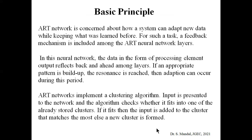Coming to the basic principle of the ART network: ART network is concerned with how a system can adapt to new data or new patterns while keeping what was learned before. Since we want to store previously learned patterns, we need to use a feedback mechanism. A feedback mechanism is included among the ART neural network layers, where data in the form of preprocessing element output reflects back and forth among the layers.